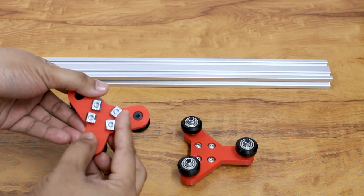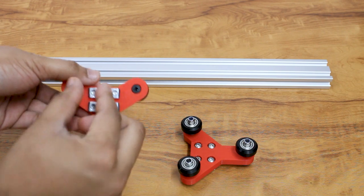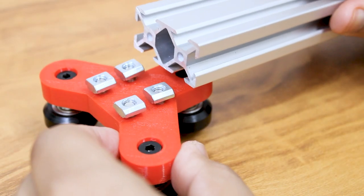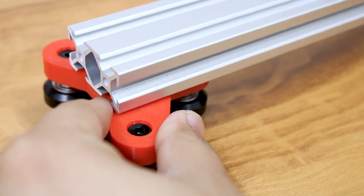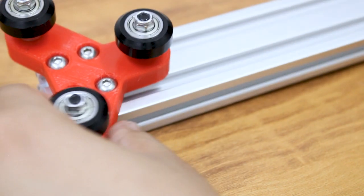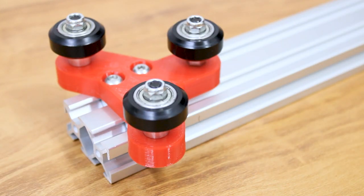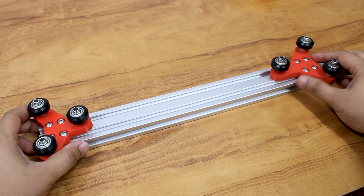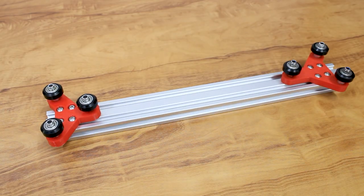Mount the plates on the 400mm 20x40mm profile with sliding nuts. Do the same for the right side. Do not tighten the bolts as we require some adjustment.